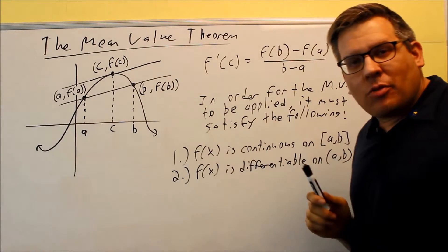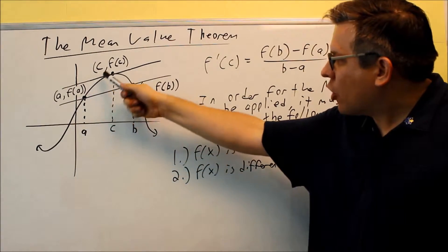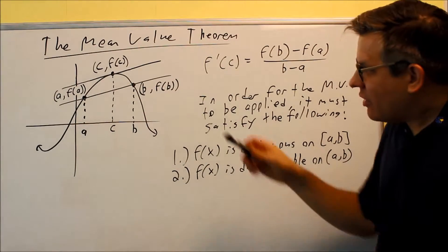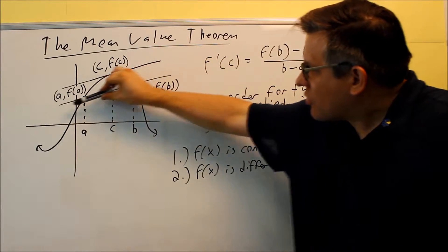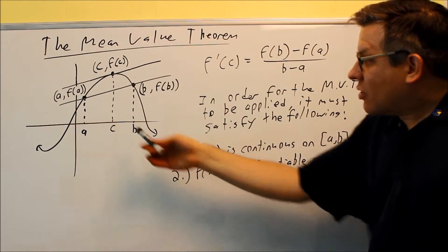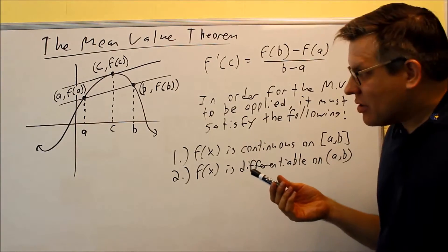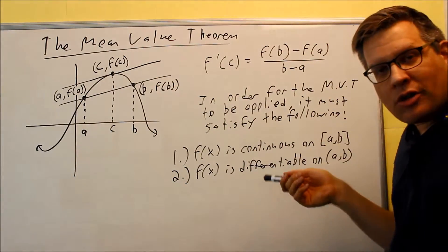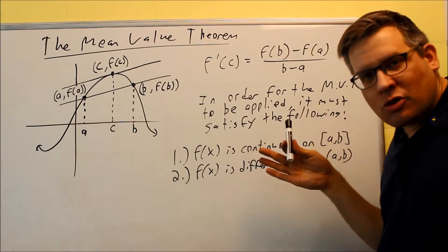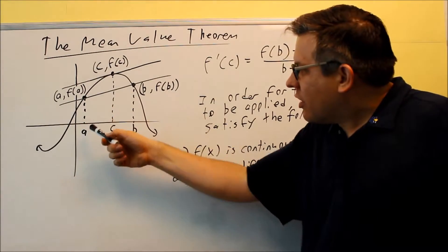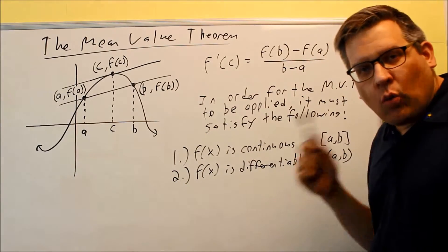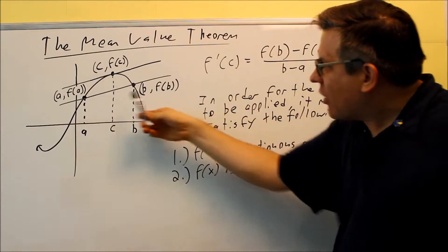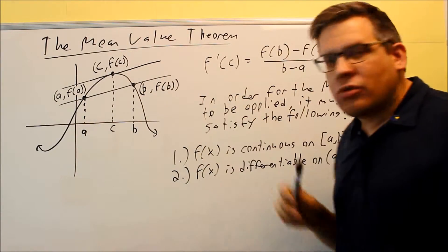The mean value theorem says that because the line is going to have to go through A and curve and come back down, that means that somewhere I'm going to be able to find the slope of a tangent line that's the same as the slope of this one, and that's going to occur at C. So the mean value theorem says that if I have a continuous function, there's a couple conditions I'll talk about that must be met in order for this to work, but assuming those are met, that means that you're guaranteed to find at least one value of C on that interval to where the slope of the tangent at C is exactly the same as the slope that goes through A and B.